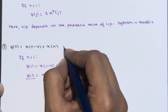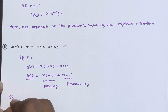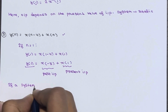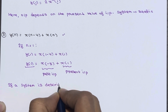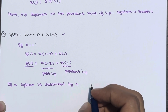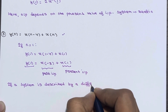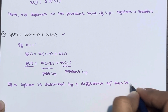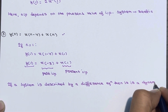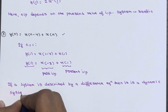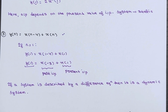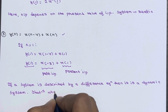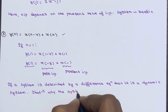Also notice that this is a difference equation. From the last lecture, we know that if a system is described by a difference equation, then it is a dynamic system. That's why this system is also dynamic.